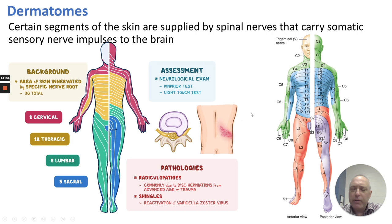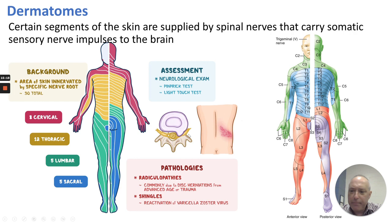Spinal nerves carry somatic sensory nerve impulses from the skin to the brain. There are four regions represented: cervical, thoracic, lumbar, and sacral. Each spinal nerve — like C2, C3, C4, C5 — innervates a certain stretch of skin called a dermatome. This can manifest as a rash if a virus resides in one of the dorsal root ganglia. Shingles (herpes zoster) is very painful and tends to follow a dermatome because the virus resides in the dorsal root ganglion, causing pain along that specific dermatome. Disc herniations from age or trauma can also impinge on spinal nerves and cause problems.